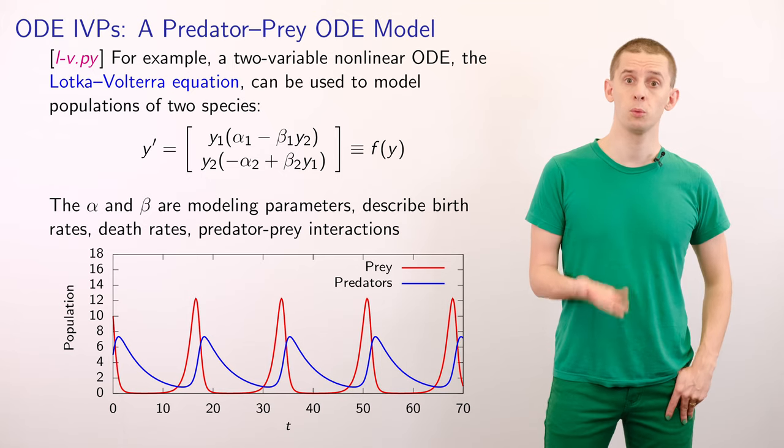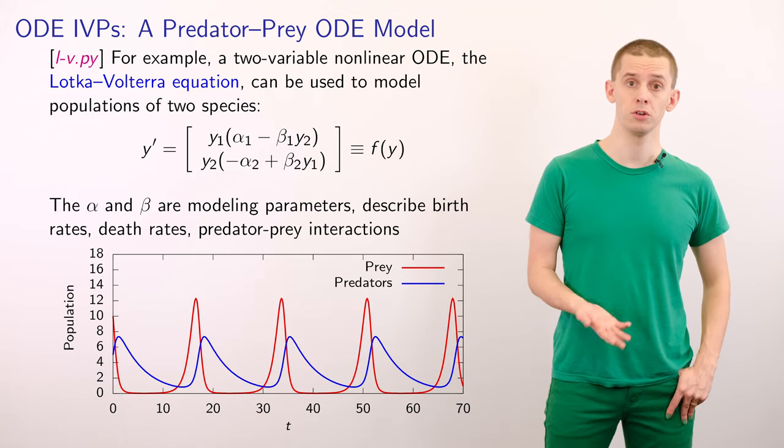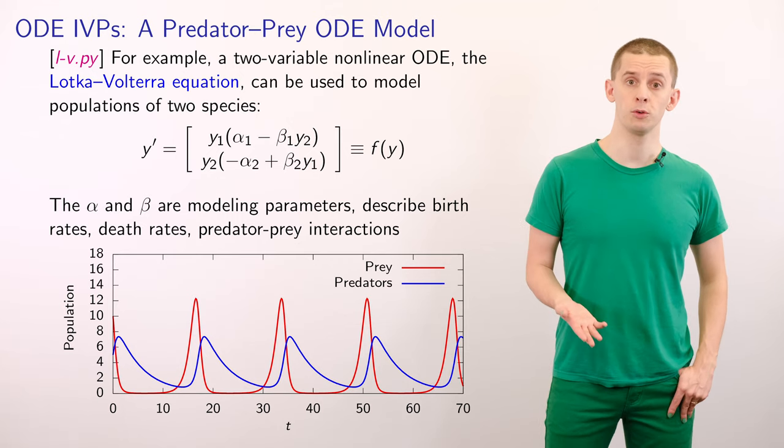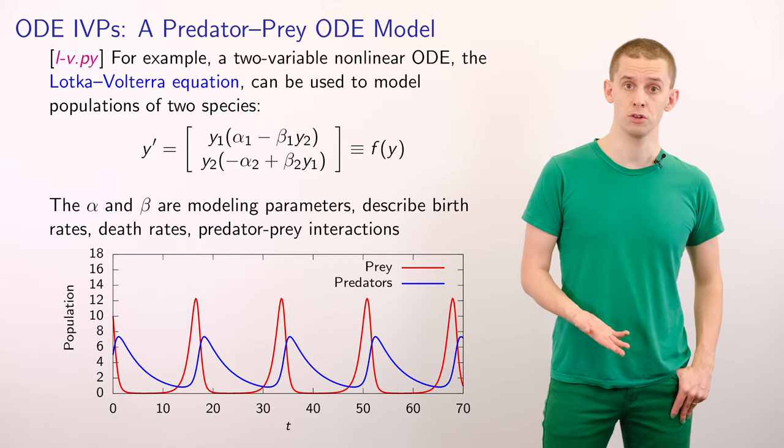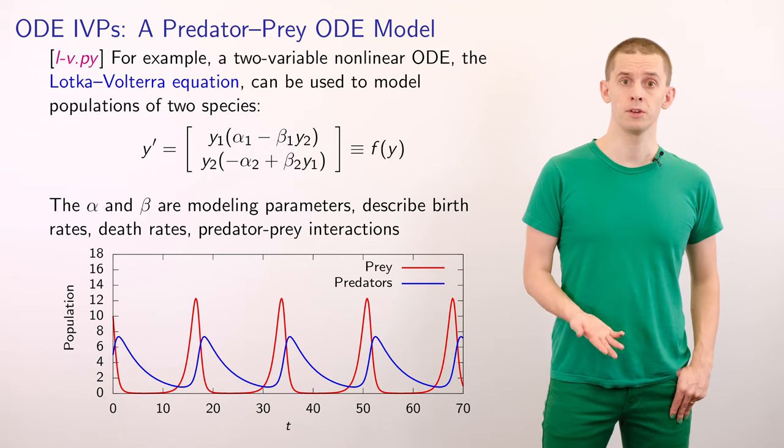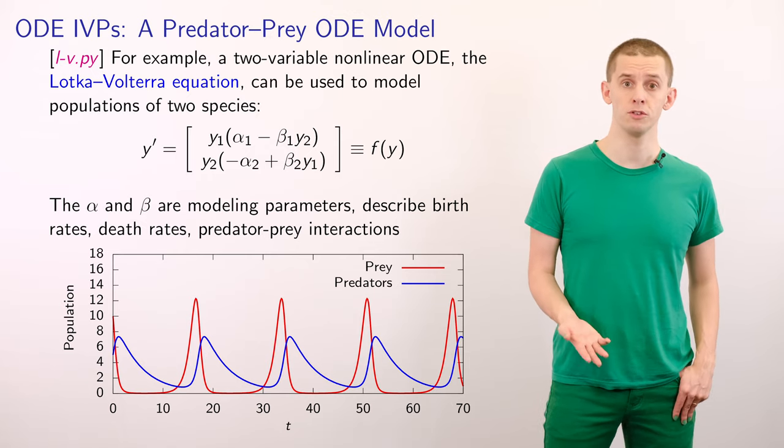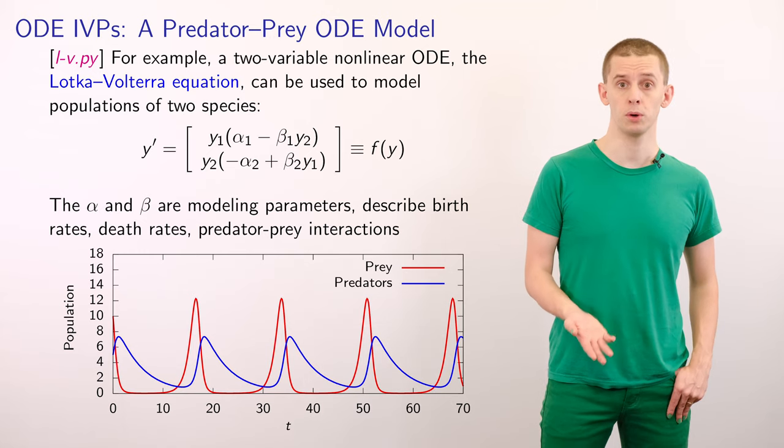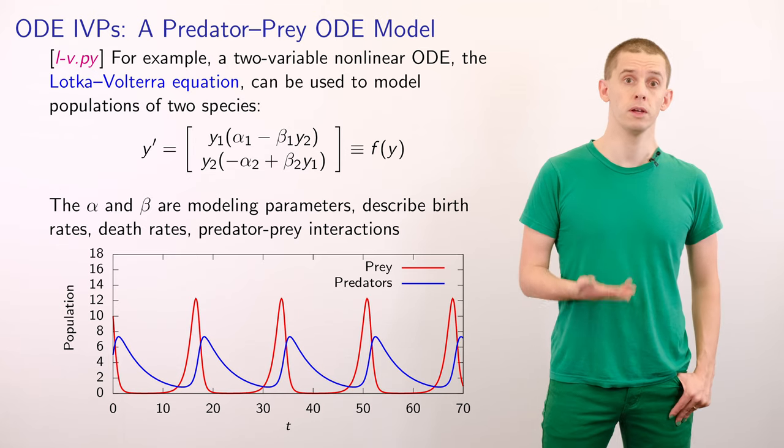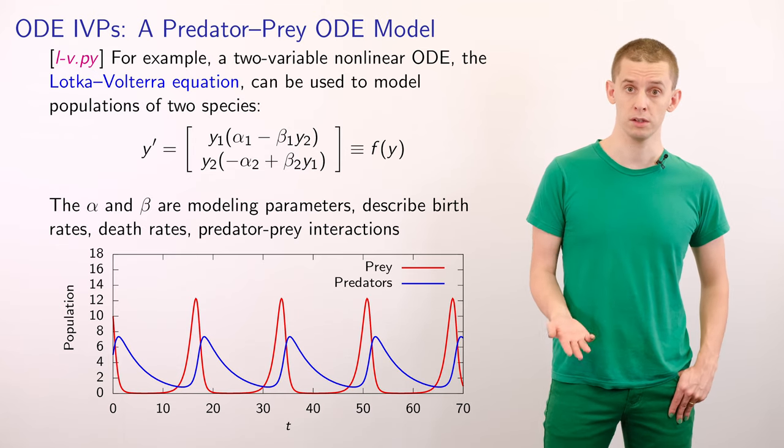And here we let y1 be the population of a prey species, for example rabbits, and we let y2 be the population of a predator species, for example foxes. And if we look at the ordinary differential equation for y1 prime, then we'll have two terms. We'll have an exponential growth in the prey in the absence of any predators.